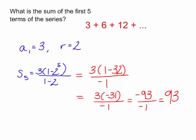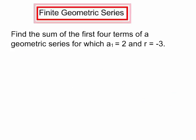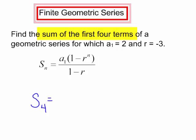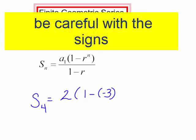Let's try another problem. Find the sum of the first four terms of a geometric series for which a sub 1 equals 2 and the common ratio equals negative 3. Here is my formula — let's plug in the values. I am looking for S sub 4. The first term is 2, times 1 minus negative 3 to the fourth, divided by 1 minus negative 3.